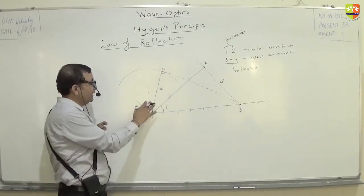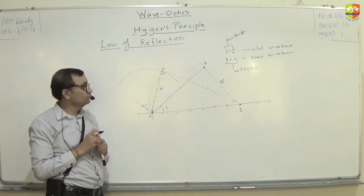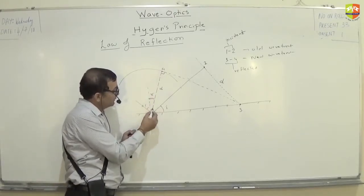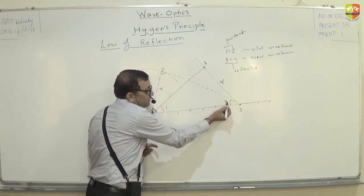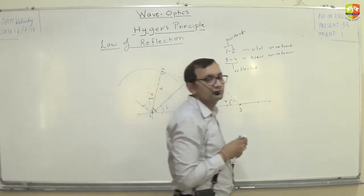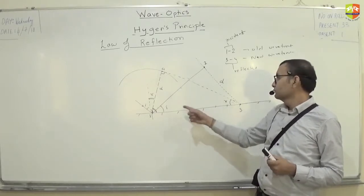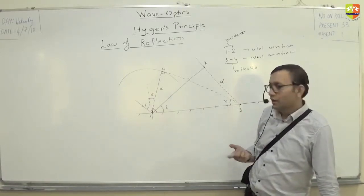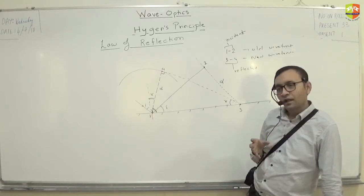Can you show where the reflected angle is? This angle is the reflected angle R. If this is R, then this will be 90 minus R, and the remaining angle is R. Now can you prove I equals R? We have two congruent right-angle triangles with a common hypotenuse, both have a 90-degree angle, and both have the same distance d. So these two angles automatically become equal, and we have proved the law of reflection using Huygens principle.